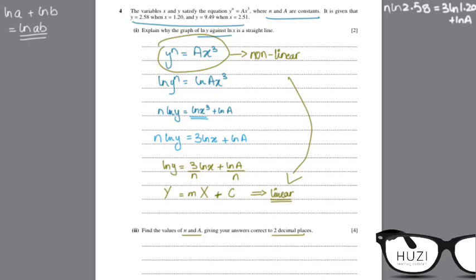We get our first equation and the next equation will be when y is 9.49. So, n ln 9.49 equals 3 ln 2.51 plus ln a. After solving for n and y using these two simultaneous equations, your answer should be n equals 1.70 corrected two decimal places and a equals 2.90.